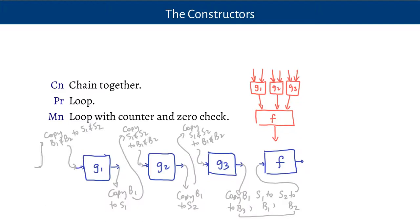Notice the flow of execution of this program: it just starts at the left, there's all this bookkeeping, but then it does G1, more bookkeeping, then G2, bookkeeping, G3, then more bookkeeping and F. It just goes all the way from the left to the right — there are no loops in this, other than whatever loops are inside G1, G2, G3, and F. Primitive recursion and minimization are not going to be like that.